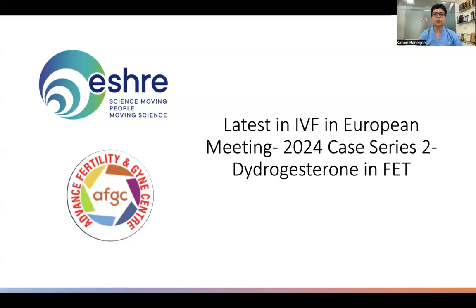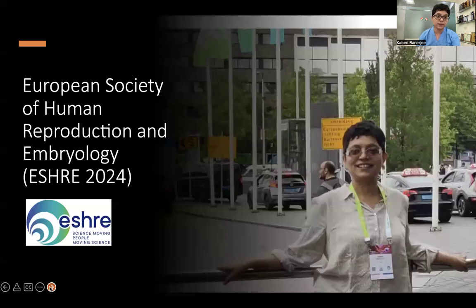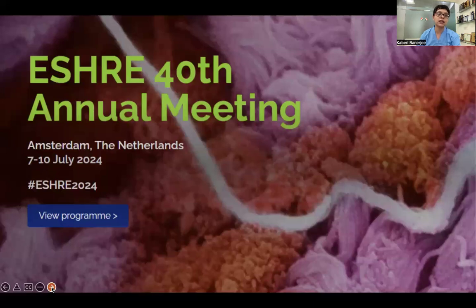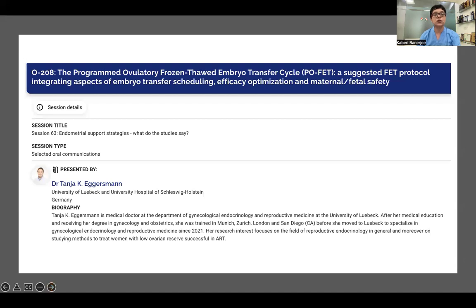Hello everyone, welcome to our series 2 of 'Latest in IVF.' At the European meeting last month in July, didrogesterone in FET — frozen embryo transfer — was a key topic. Today we are going to discuss the role of this molecule in frozen embryo transfers, which was discussed at this conference held every year. It's one of the largest conferences in IVF where the whole world gets together to collate data and share experiences. This time it was in Amsterdam. Today's paper I want to discuss is: 'Programmed Ovulatory Frozen Thawed Embryo Transfer.'